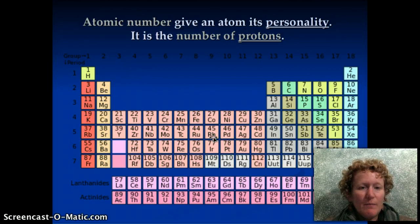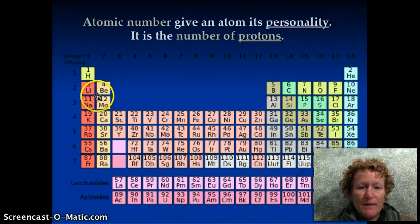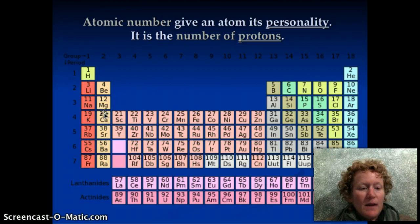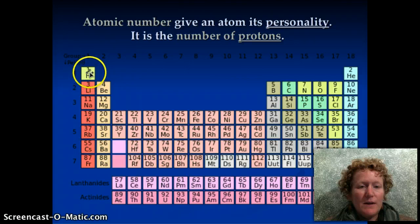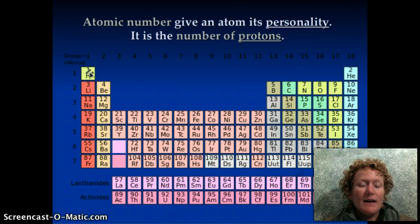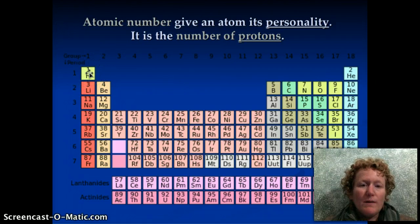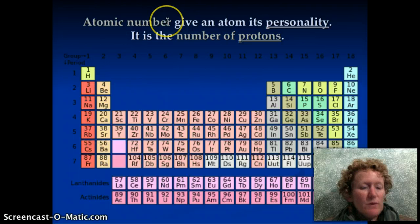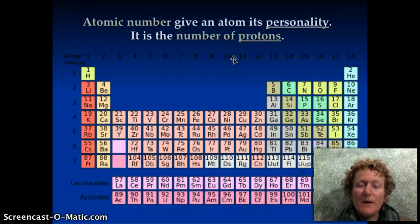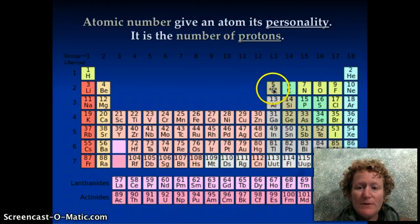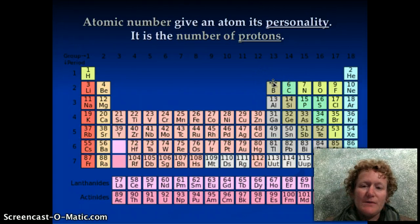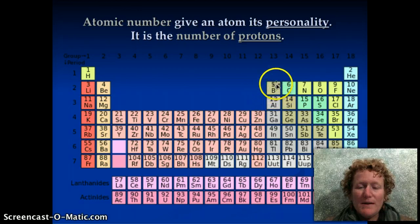The atomic number is the number of protons. It can be seen here for every element at the top of the periodic table box that that element is in. Remember, an element is all the same kind of atoms. So for instance, right here, hydrogen is an element, and all the atoms in hydrogen, if you have the pure element, are exactly the same kind of atoms. They would all have one proton. Because of the atomic number, the protons give the atom its personality. You know what element it is by how many protons. For instance, my favorite element, which is boron, has five protons. My name is Beth, and Beth happens to start with B, so boron is my favorite element.